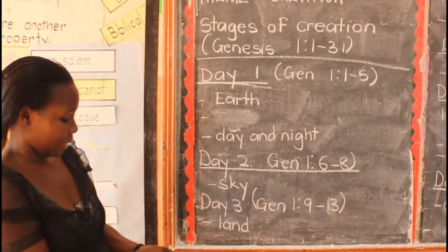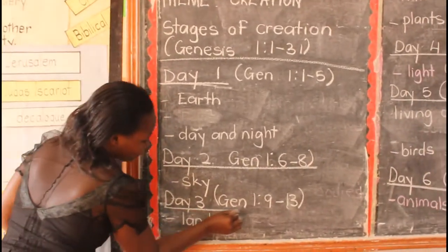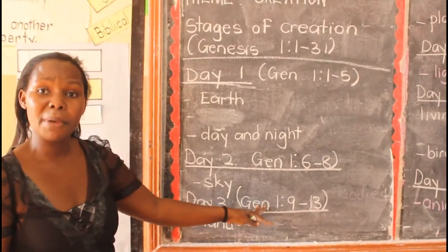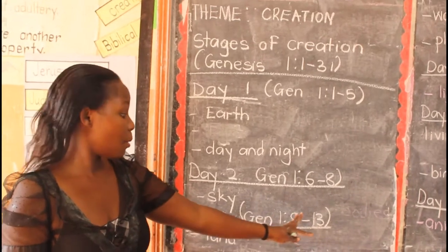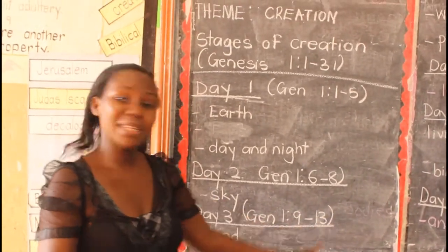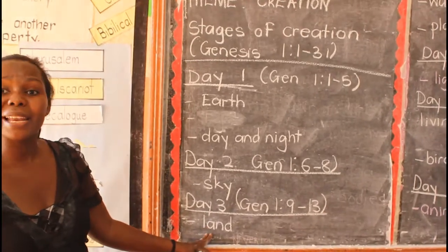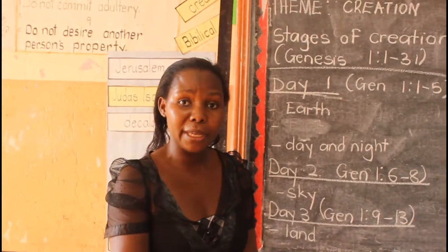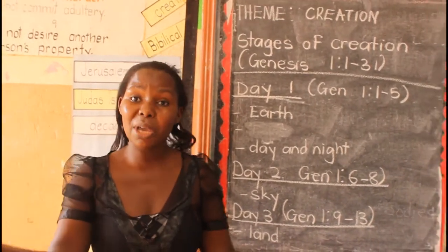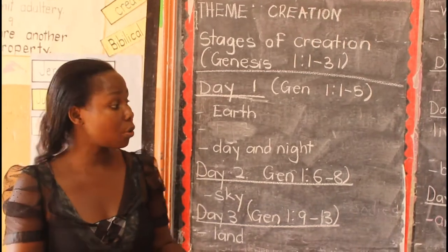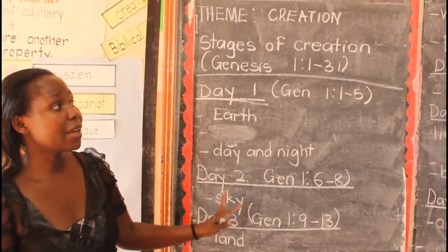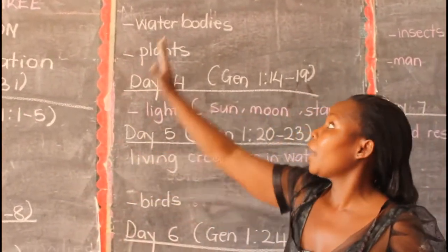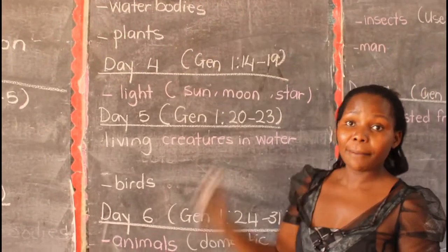Still reading the Bible — still in chapter 1, from verse 9 to verse 13. On the third day, God created the land. When I talk of the land, I mean the soil — the land where we put buildings, the schools, the houses where we sleep, the land where we plant our crops. God created the land on the third day. From there, still on the third day, God also created the water bodies.